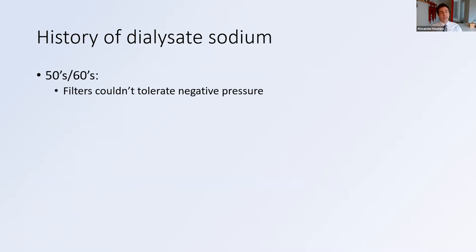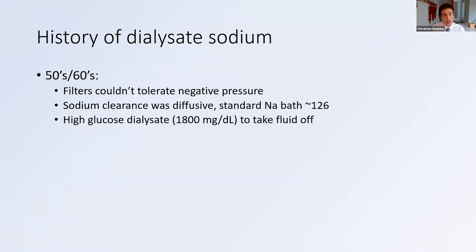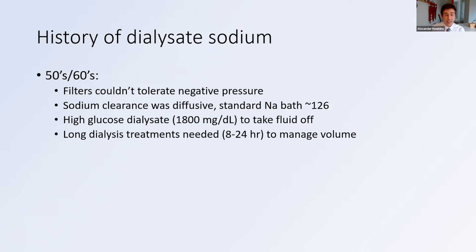Back in the 50s and 60s, filters could not tolerate negative pressure. You couldn't apply any ultrafiltration pressure to the filters, so sodium clearance was entirely diffusive. The standard sodium bath at this time was about 126, although some were using even lower — down to 120. It actually mimics peritoneal dialysis in some ways. There was a high glucose load in the dialysate designed to pull more fluid off via an osmotic gradient. However, when you don't have ultrafiltration, this required very long treatment times — eight to 24 hours for a dialysis session in order to adequately manage volume.